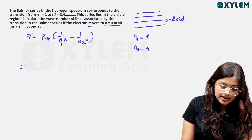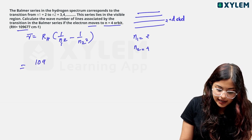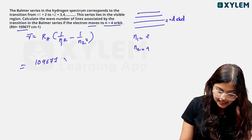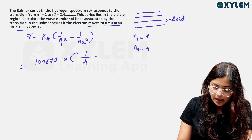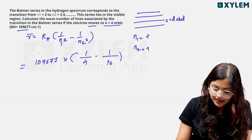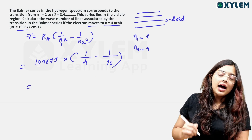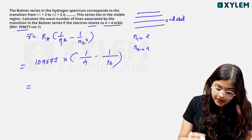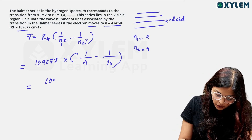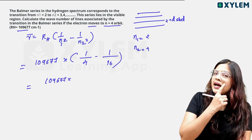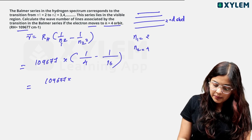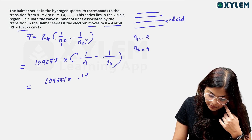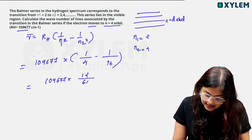Substituting: R_H times (1/4 minus 1/16). That gives R_H times (4/16 minus 1/16) equals R_H times (3/16). Calculating: 12 divided by 64 simplifies, giving the wave number result. Numerically: 0.1875 times R_H.